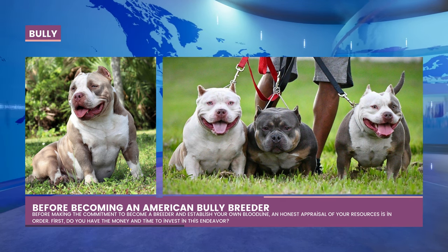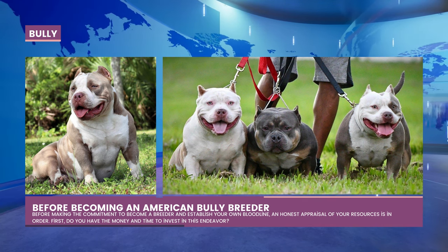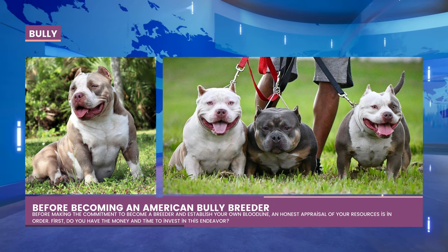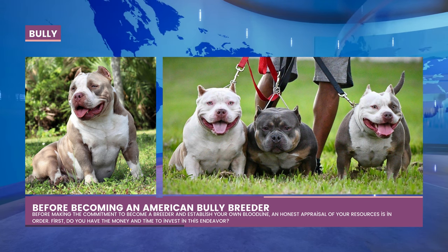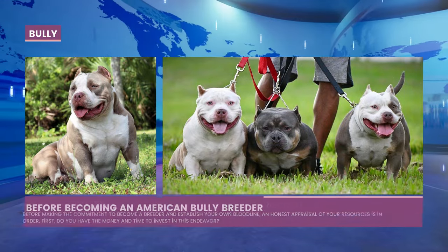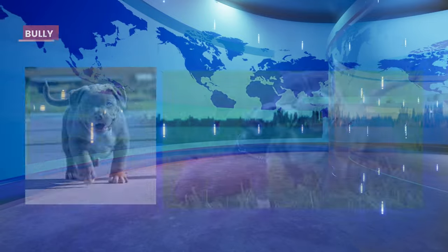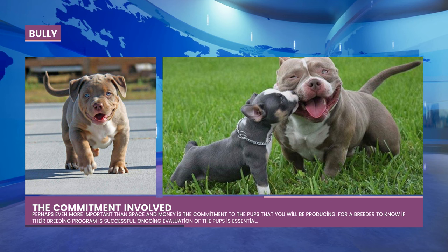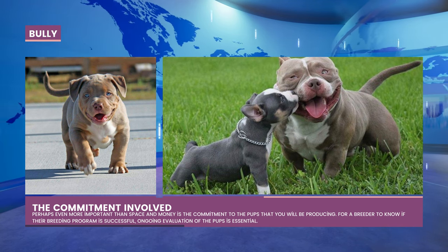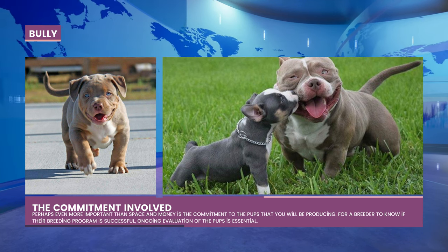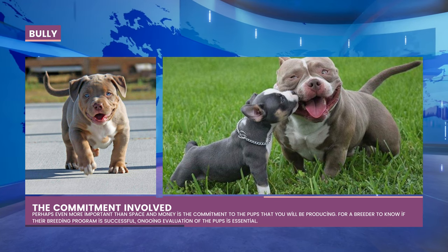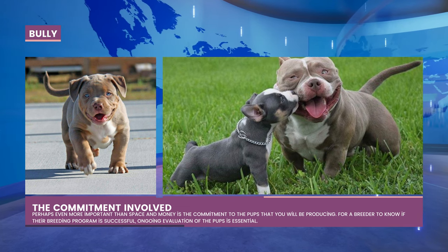Starting with two or three good foundation bitches typically does not require a large kennel facility. You'll need funds for progesterone assessments, artificial inseminations, emergency C-sections, veterinary care, and the puppy's well-being. Have $3,000–$5,000 set aside in case your breeding female gets sick or contracts a disease like pyometra. The worst outcome is starting to breed and finding yourself unable to pay for emergency care. Continuous evaluation of pups is necessary to determine whether your breeding program is effective.